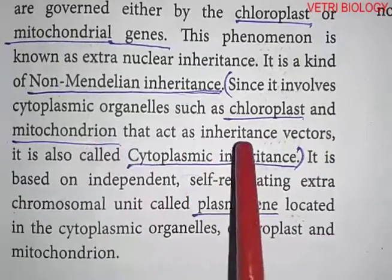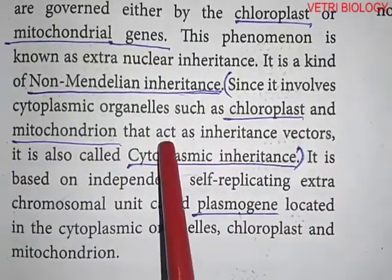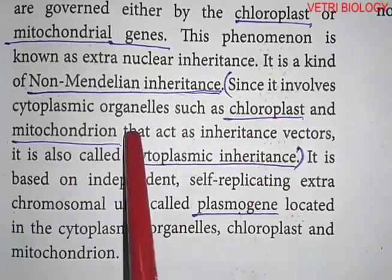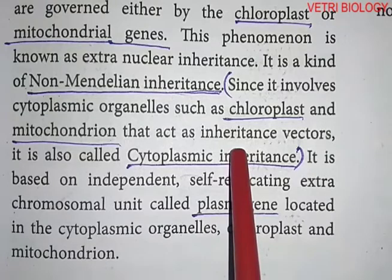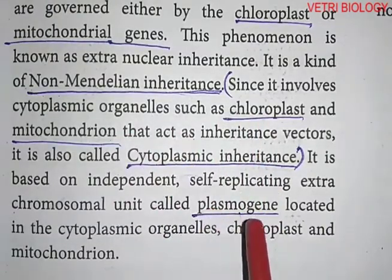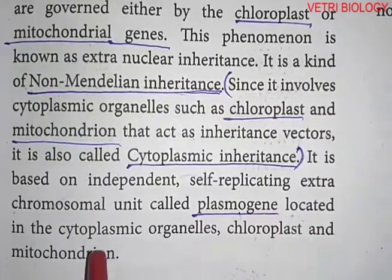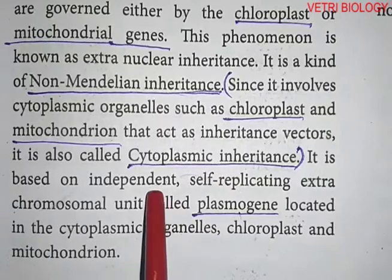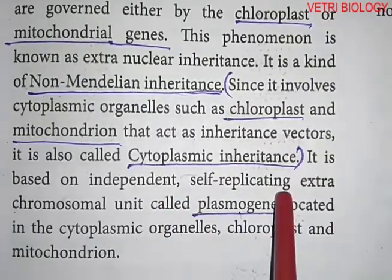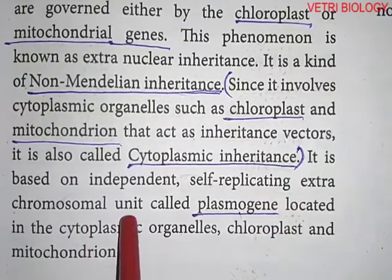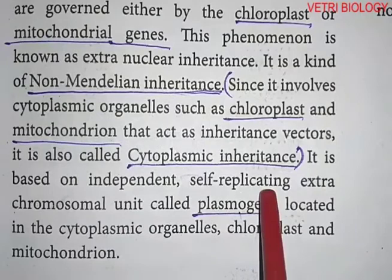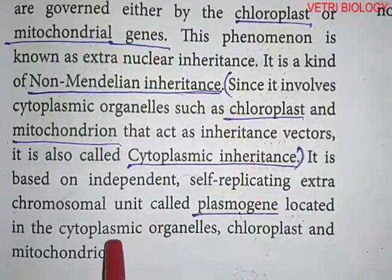Chloroplasts and mitochondria act as inheritance vectors, so this is called cytoplasmic inheritance because they are present in the cytoplasm. The name of the gene present in these organelles is plasmogene. Plasmogenes are located in the cytoplasmic organelles — chloroplasts and mitochondria. They are independent and self-replicating extra chromosomal units.